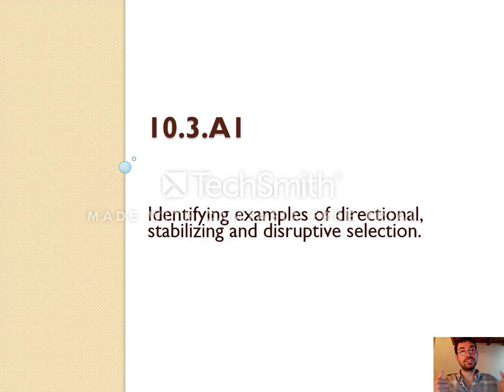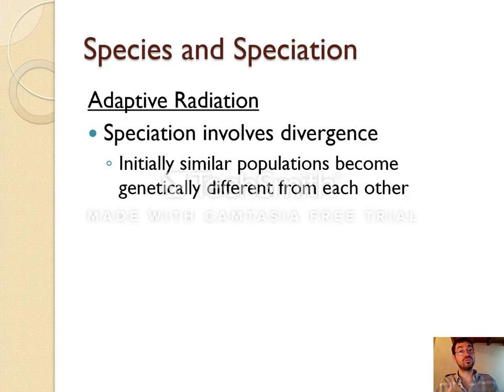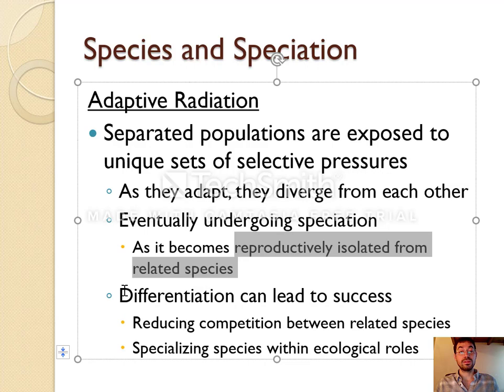Once populations have been divided, different selection pressures happen in each population. There are three types of selection you are required to know: directional, stabilizing, and disruptive. These can cause speciation because in order to speciate — to become a new species — the two populations have to become different. As the separated populations are exposed to different environments, what helps them survive and reproduce will differ in each one. As they adapt, they will diverge, becoming more and more different until they are a different species unable to reproduce with each other, even if they were to meet again.